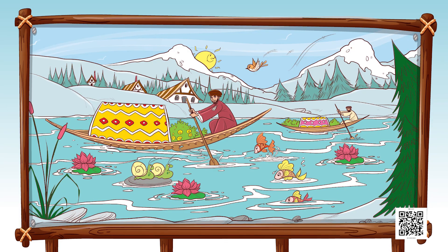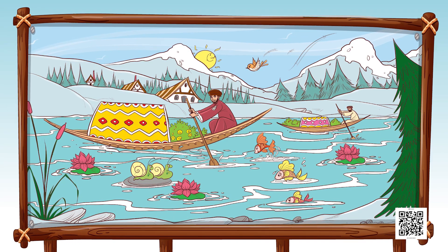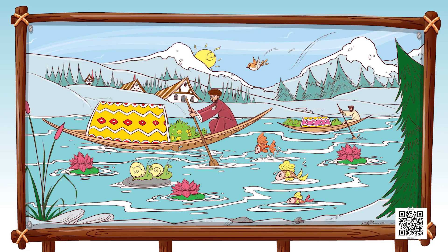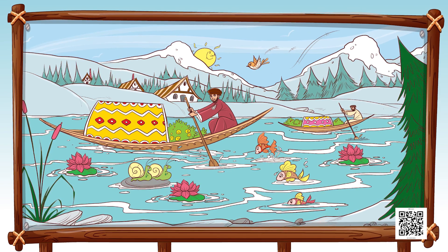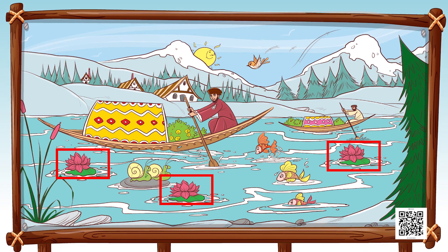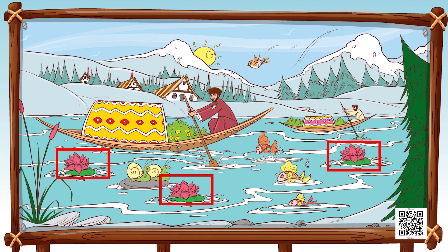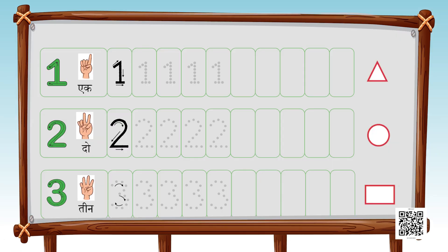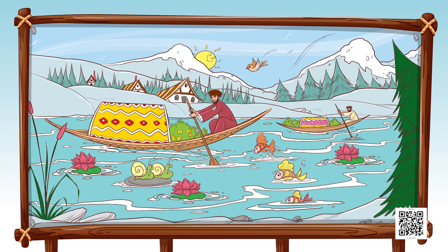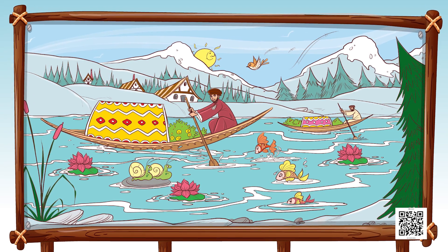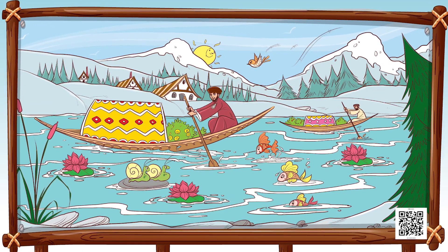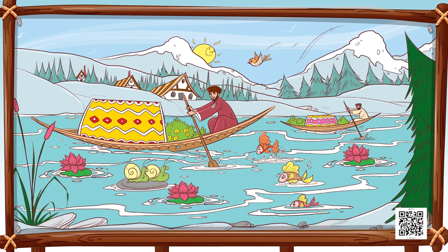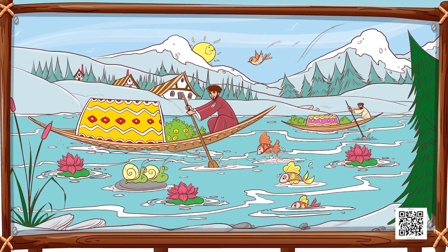Now draw a rectangle around the objects which are three in number. Look at the picture carefully and try to pinpoint which objects are three in number, then write down three on your sheets. We have already observed one bird, two snails, and three lotuses. Similarly, you have to observe other objects which are one, two, and three in number.